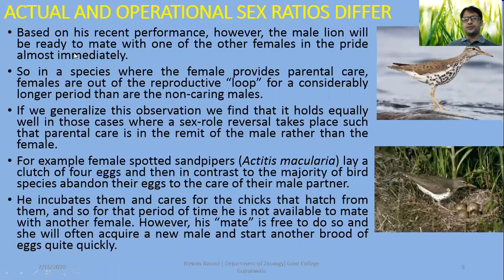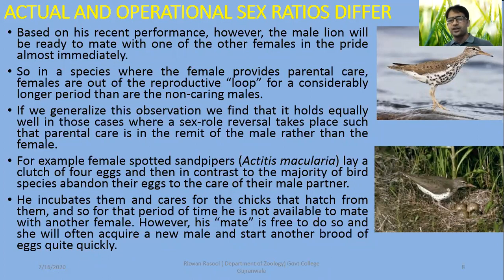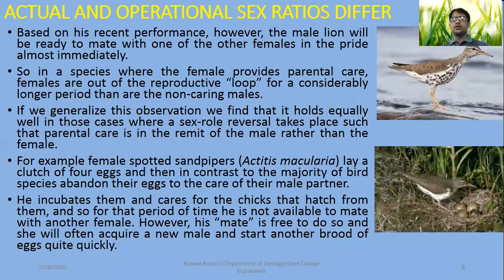Based on this, however, the male lion will be ready to mate with one of the other females in the group almost immediately. But in a species where the female provides parental care, females are out of the reproductive loop for a longer period — they will cycle periodically between reproduction and parental care. If we generalize this observation, it holds equally well in cases where sexual role reversal takes place, such as when parental care is the remit of the male rather than the female — in which case the male will be out of the reproductive loop.